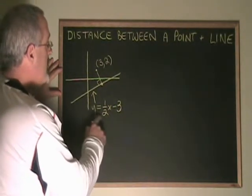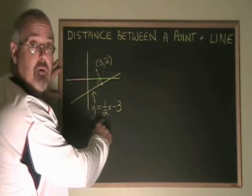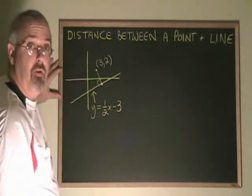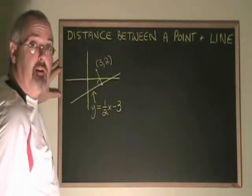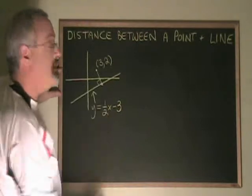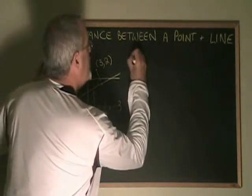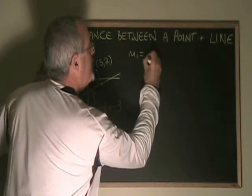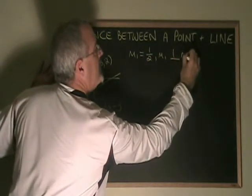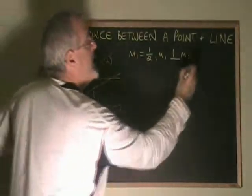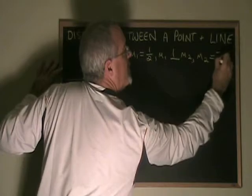We know that the slope of this line is 1 half. The equation is in y equals mx plus b form, m is equal to 1 half. And we know that since the two lines are perpendicular, the slope of this line has to be the negative reciprocal of 1 half. We write m1 equals 1 half, m1 is perpendicular to m2. Therefore, m2 must be negative 2 over 1.